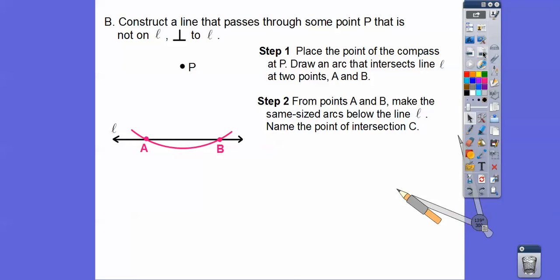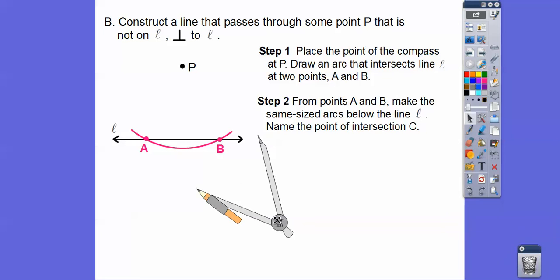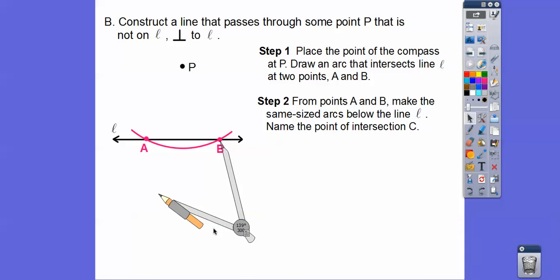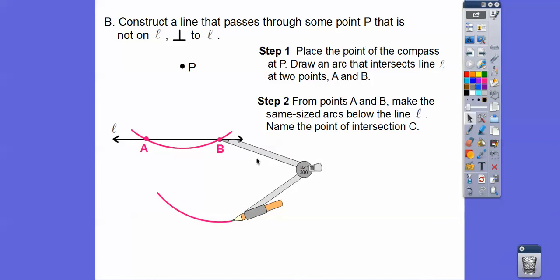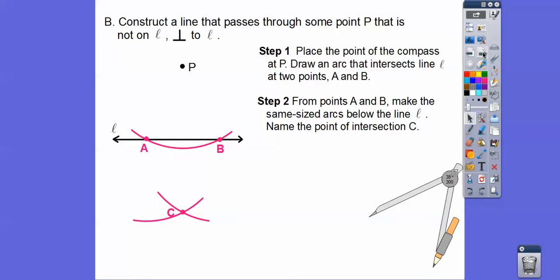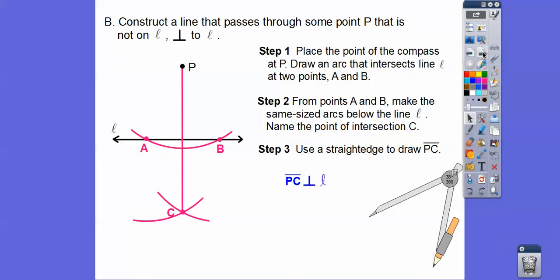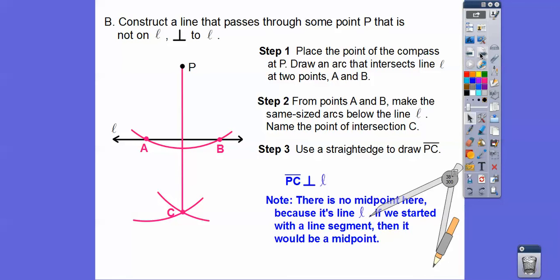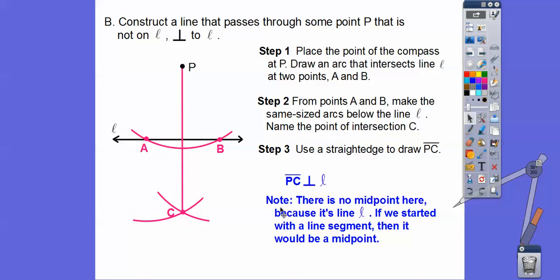From points A and B, make the same size arc below the line. Take the compass and put it on point B, draw an arc below, then without adjusting the compass slide it to point A and do the same thing with the same compass opening. Label this intersection point C. Now just use a straight edge to draw PC. What we did is create a perpendicular line to L. Note: this is a line, so there's no midpoint here — lines are infinite, they go on forever, so there is no halfway point.